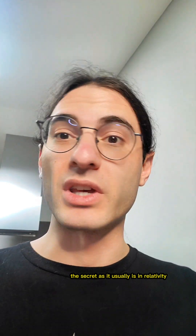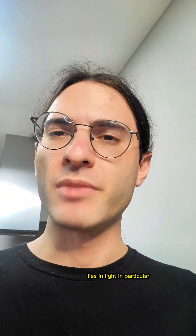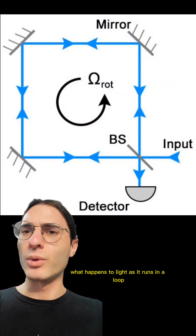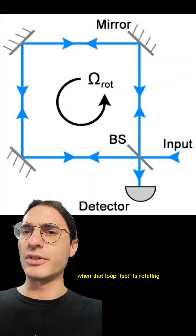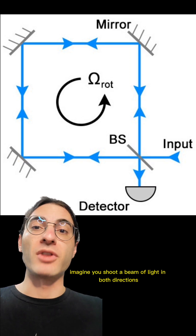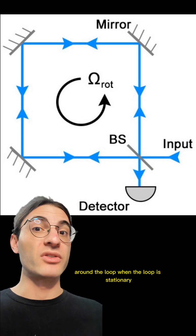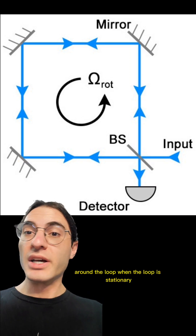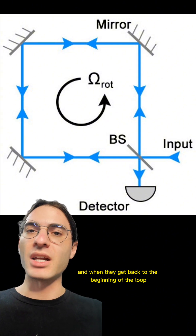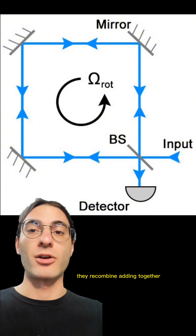The secret, as it usually is in relativity, lies in light. In particular, what happens to light as it runs in a loop when that loop itself is rotating? Imagine you shoot a beam of light in both directions around the loop when the loop is stationary. They will travel the exact same distance, and when they get back to the beginning of the loop, they recombine, adding together.